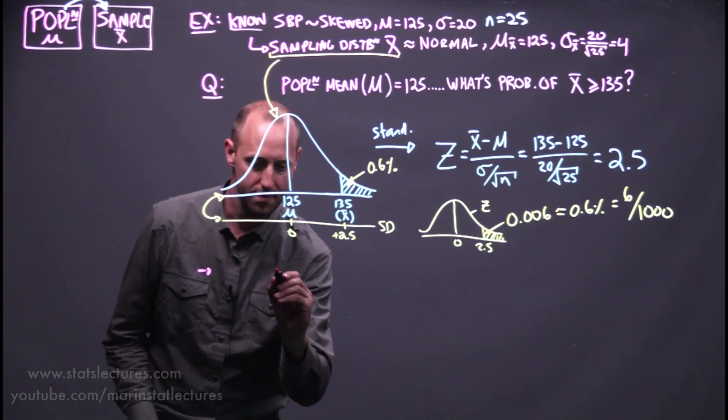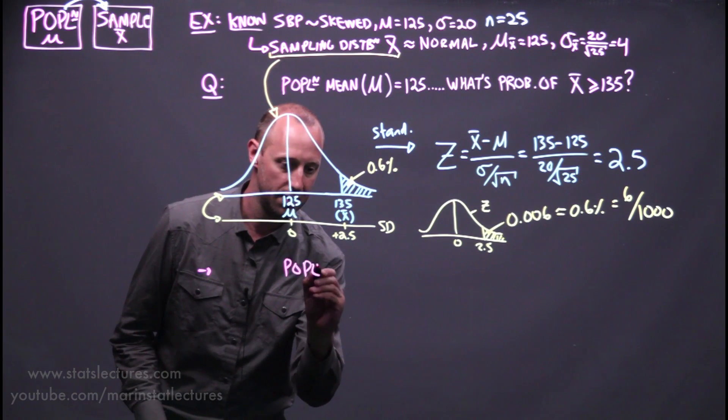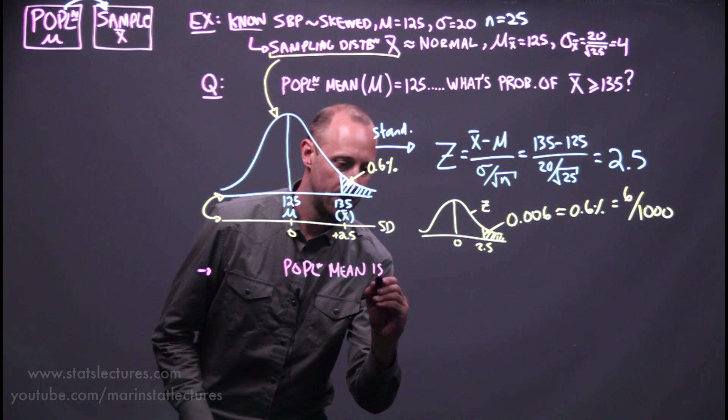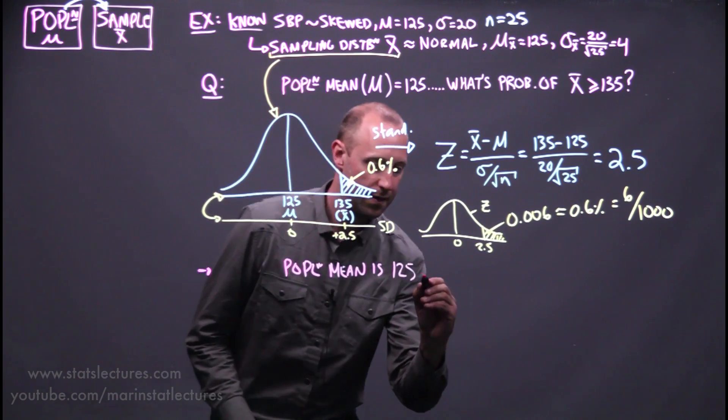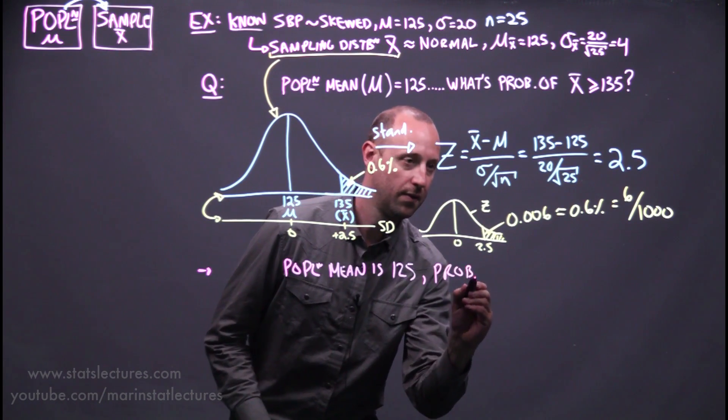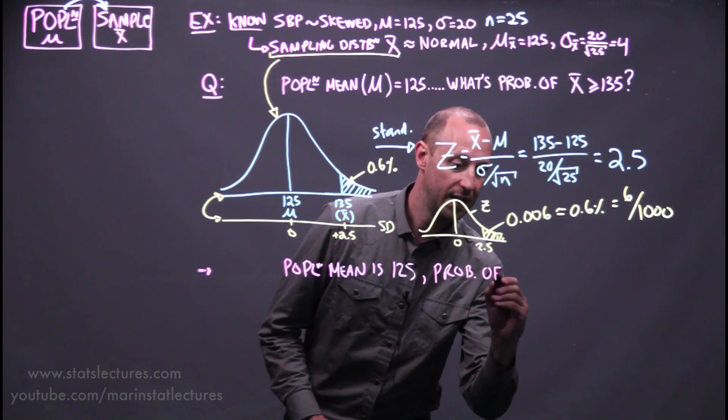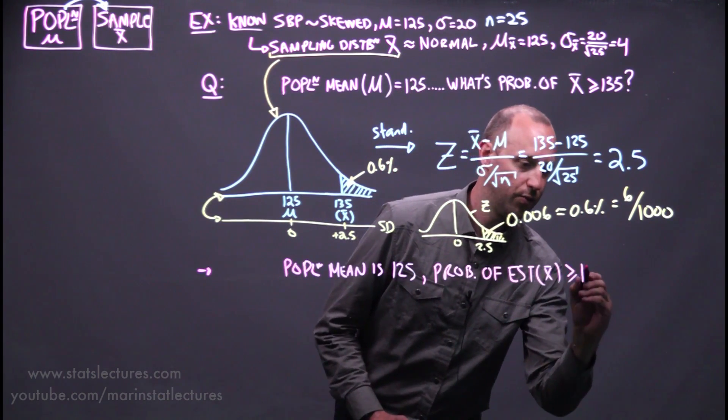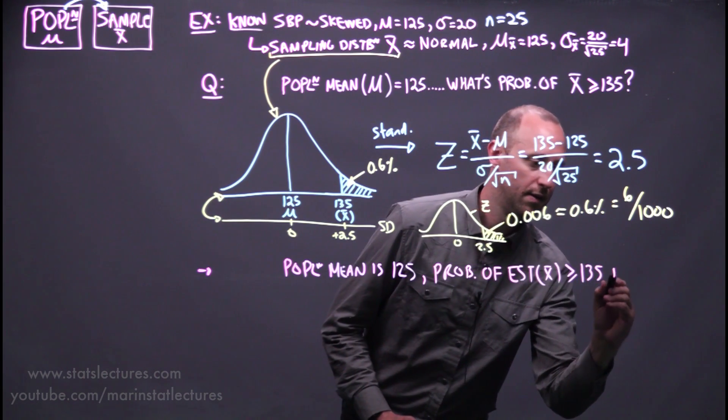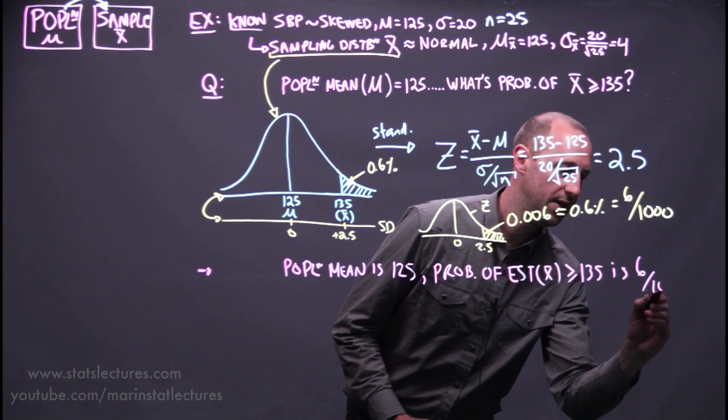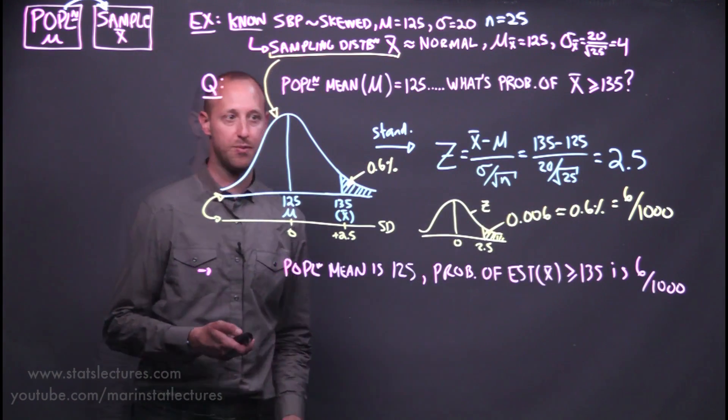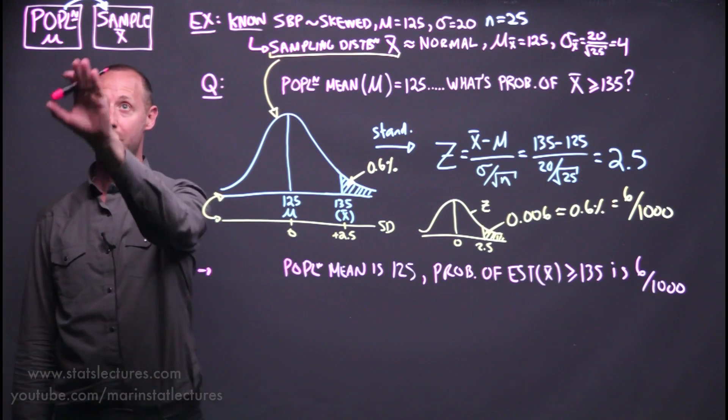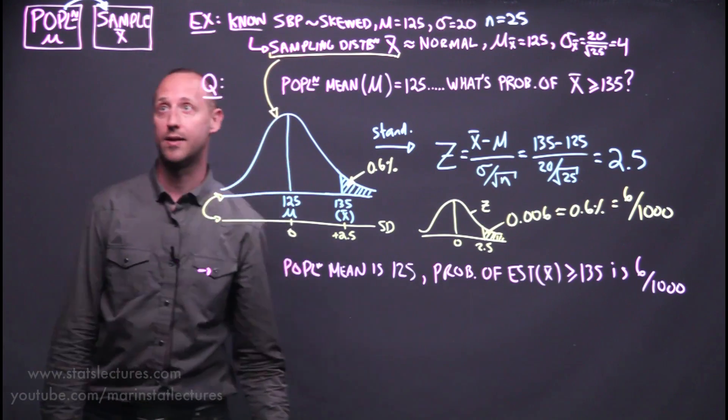So let's write that out. What we're finding here is that the population mean is 125. The probability of getting an estimate, our sample mean, greater or equal to 135 is only 6 in a thousand. This is living in that pretend world where we're going from knowing the truth about the population to asking about what happens when we collect a sample of data.